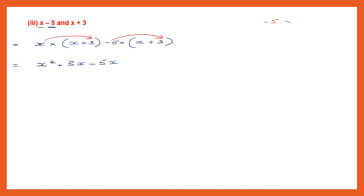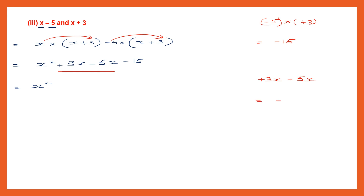Now we multiply minus 5 into plus 3. When you multiply, first multiply the signs — minus into plus is minus. 5 into 3 is 15, so that becomes minus 15. So here we have x square, then plus 3x and minus 5x which are like terms. Signs are different, so put the sign of the bigger number and subtract: 5 minus 3 is 2, that is minus 2x. Our answer is x square minus 2x minus 15.